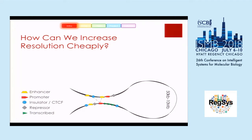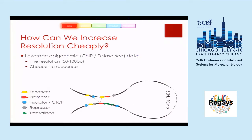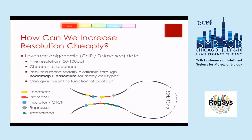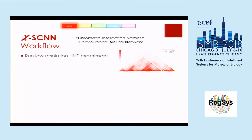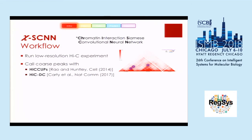So how can we increase resolution cheaply? We can leverage epigenomic data — ChIP-seq and DNase. It's much finer resolution, anywhere between 50 and 100 base pairs, and much cheaper to sequence. We have many imputed marks for the Roadmap Consortium from ChromImpute or Predicted, and it can give us insight into the function of a contact. So this is my method — it's called CHISCAN, which stands for Chromatin Interaction Siamese Convolutional Neural Net. The basic workflow is: we run a low-resolution Hi-C experiment, call coarse peaks — anywhere between 10KB and 50KB — using either HiCCUPS or Hi-C DC, and then use ChIP-seq and DNase to infer the high-resolution peaks, narrowing it down to two precise positions.